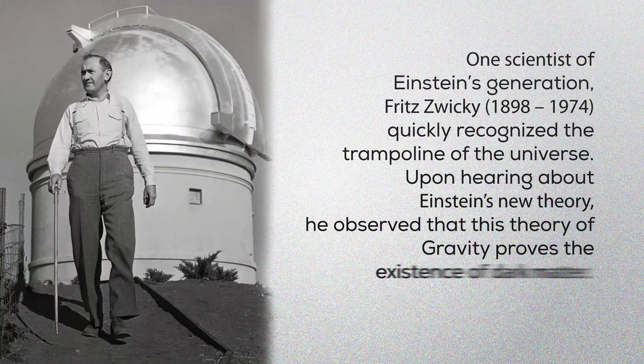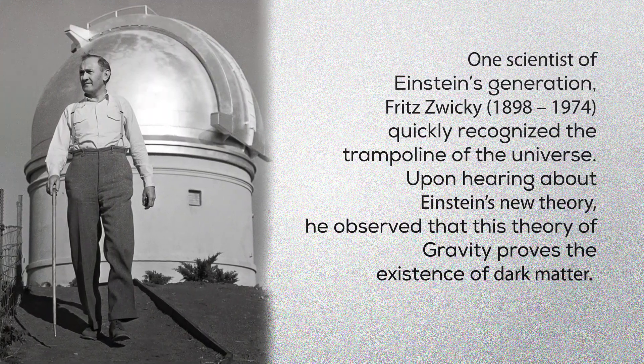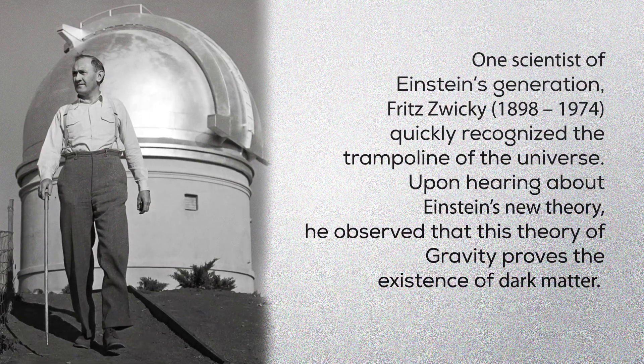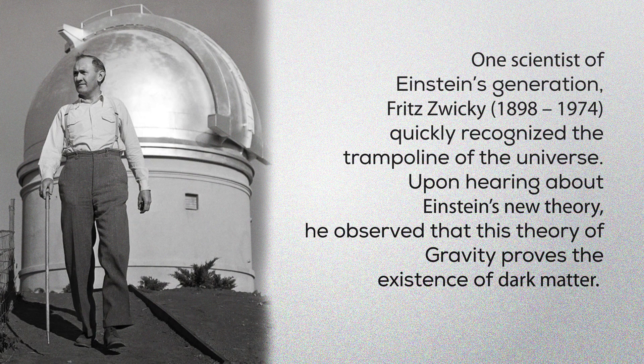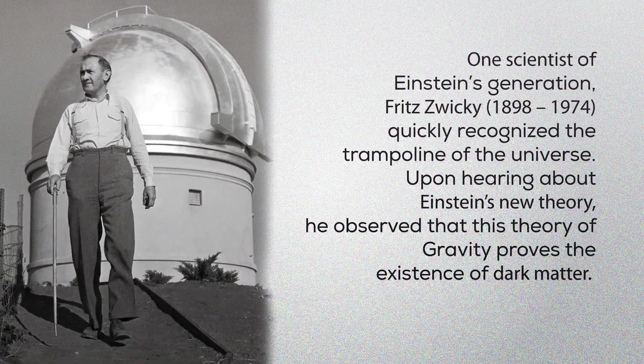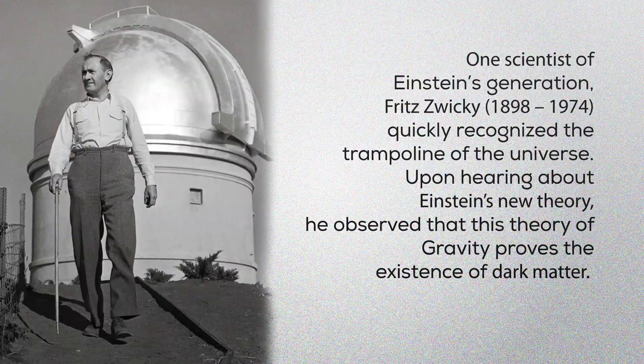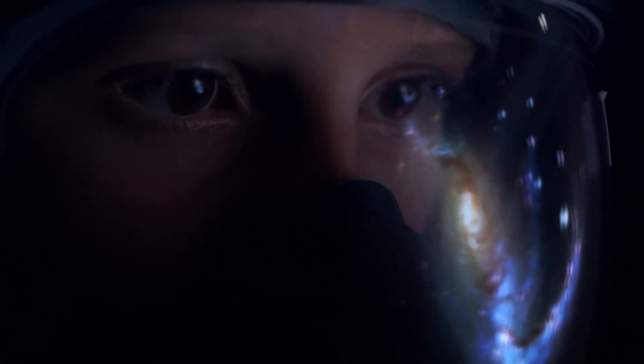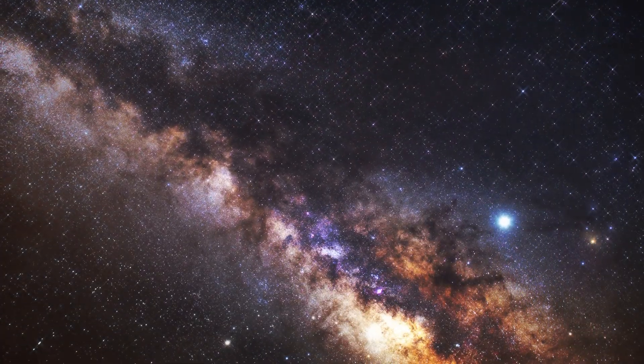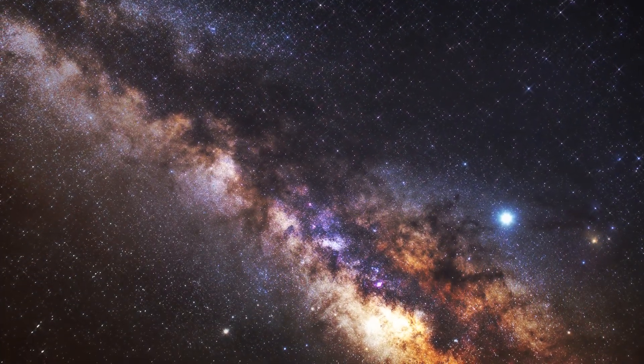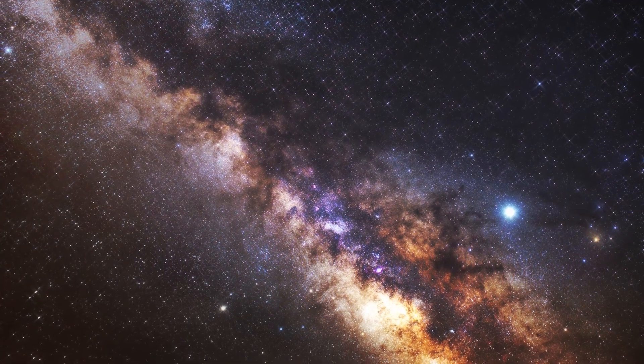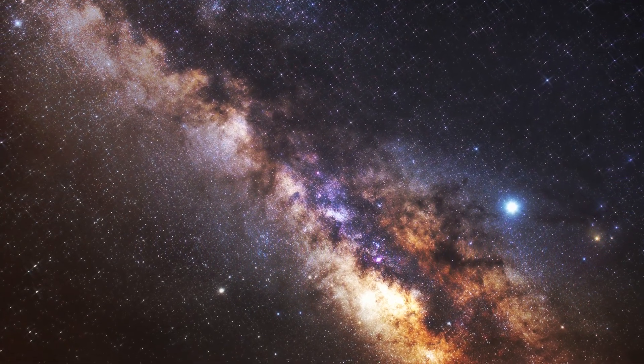One scientist of Einstein's generation, Fritz Zwicky, 1898-1974, quickly recognized the trampoline of the universe. Upon hearing about Einstein's new theory, he observed that this theory of gravity proves the existence of dark matter. Although having no genius to detect the source of gravity himself, he understood the necessary process, vital elements and contributors for gravity to appear. He provided a clear review of the mechanical details inside gravity than Einstein.